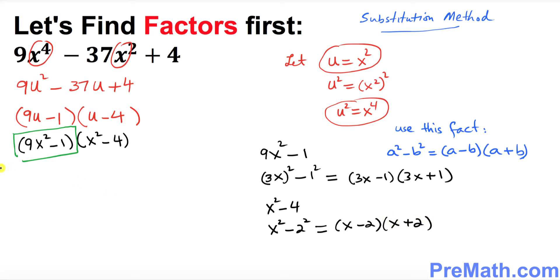So now let's go back and expand this one. We can factor further. We can write 3x minus 1 times 3x plus 1 times x minus 2 times x plus 2. So thus these are our factors for this given polynomial.